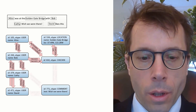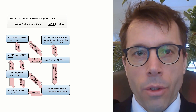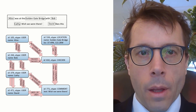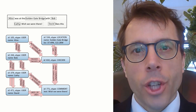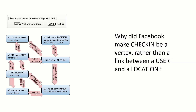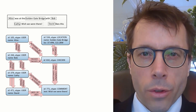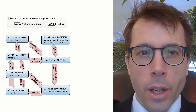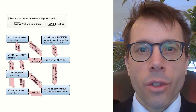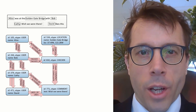Finally, the comment is linked to Kathy the commentator, to the check-in vertex she's commenting on, and also to David who liked the comment. Why do you think Facebook decided to make a check-in be a vertex rather than a link between a user and a location? The reason is that Facebook wants to attach comments to check-ins. The basic rule of graphs is that edges are only allowed to connect vertices to vertices. So if check-in were an edge, we wouldn't be allowed to attach comments to it.